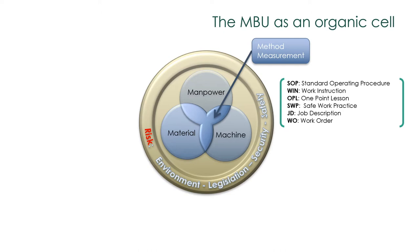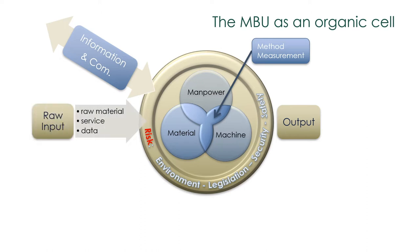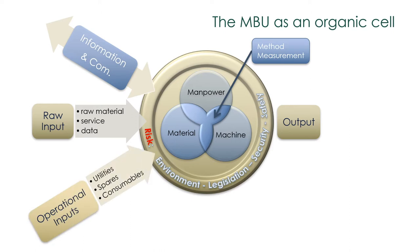Every MBU has a mission that is a specific output to an internal or external customer. There are several inputs to fulfil its mission: a two-way information and communication channel with other MBUs and external stakeholders — such as instructions to produce, non-conformance advice, and operational reporting. You will have raw inputs such as raw material, service, or data, and operational inputs such as utilities like water and electricity, and spares and consumables like oil and paper. The team applies its methods to operate and improve processes and ensure team members are competent and engaged.